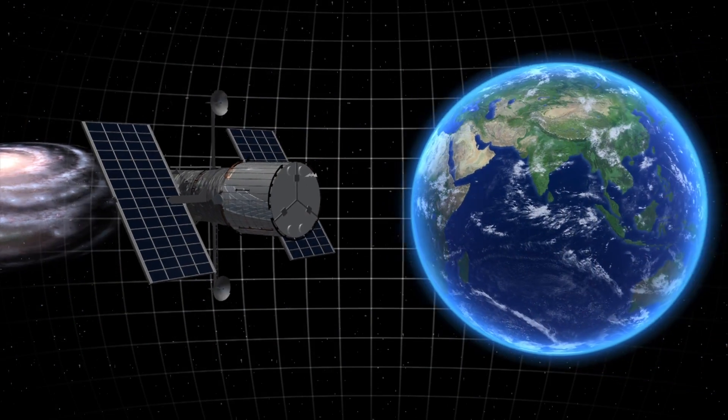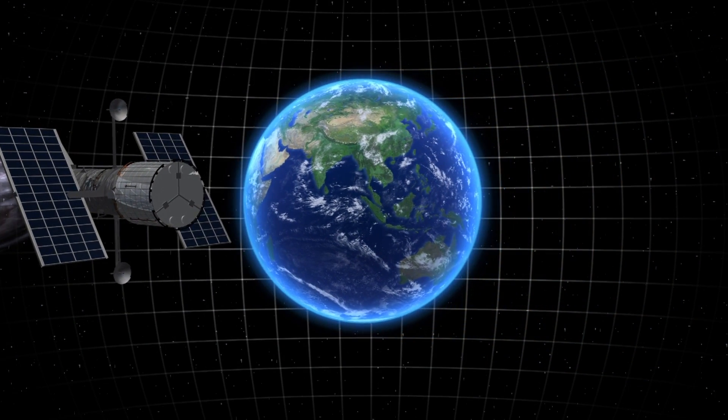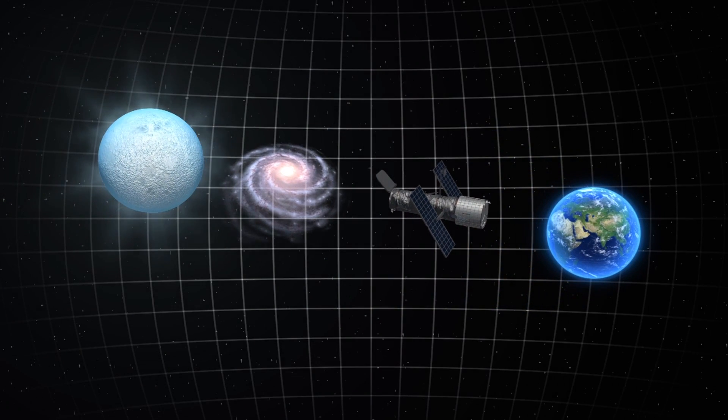Hubble saw it because of gravitational lensing, where distant starlight is bent and magnified via the gravity of a passing galaxy.